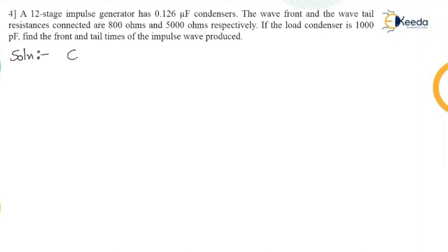The generator capacitance C1 for 12 number of stages is 0.126 upon 12. The value comes out to be 0.0105 microfarad. The value of C2 that is load condenser which is given as 1000 picofarad, so C2 is same which is same as like previous numerical.